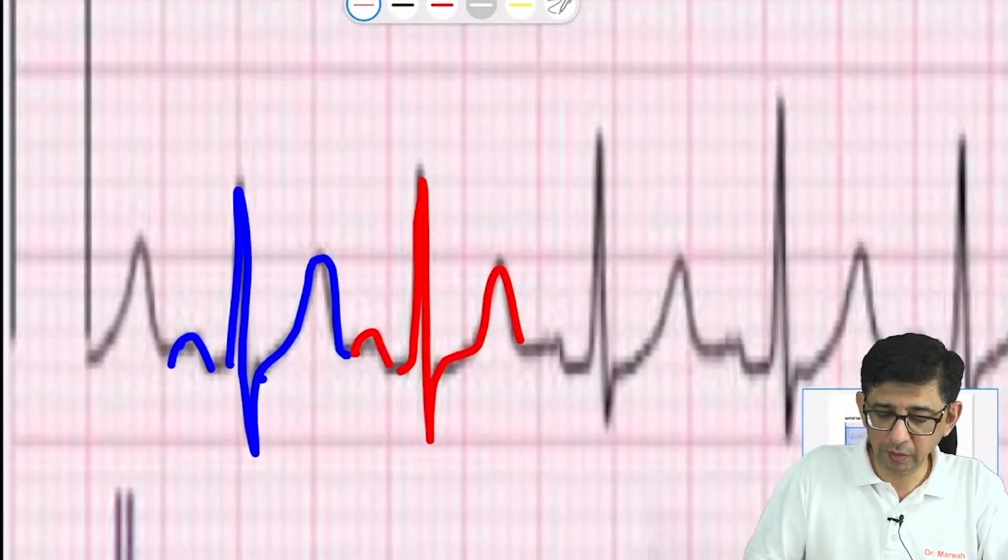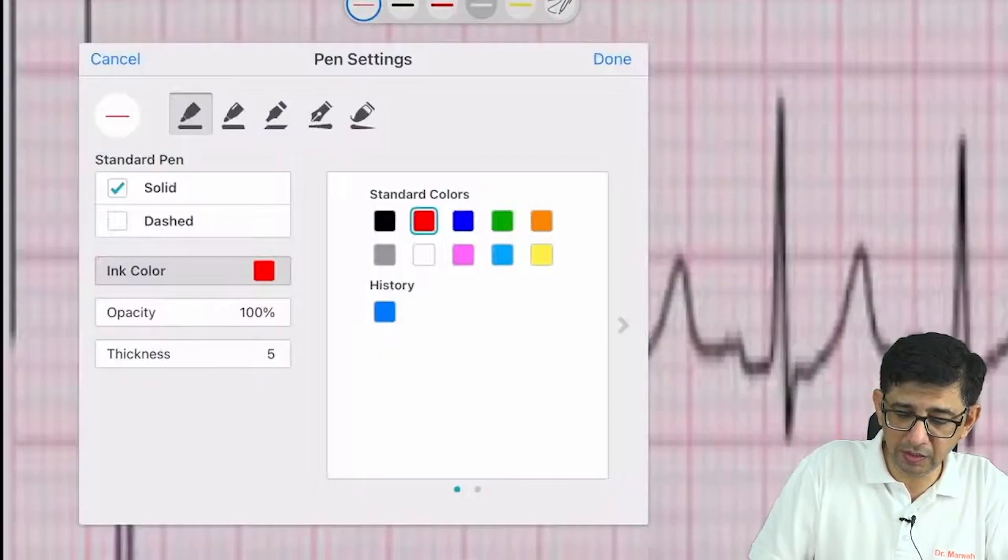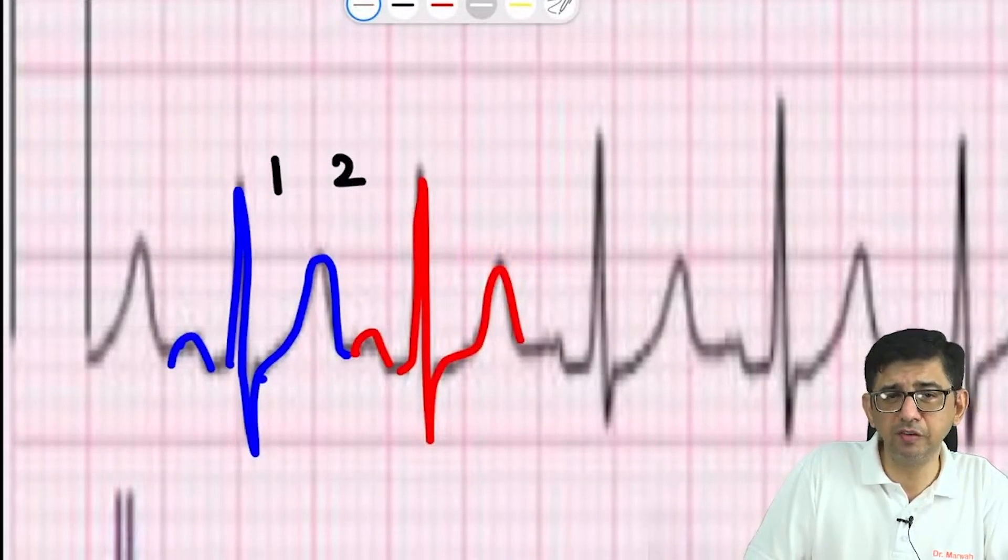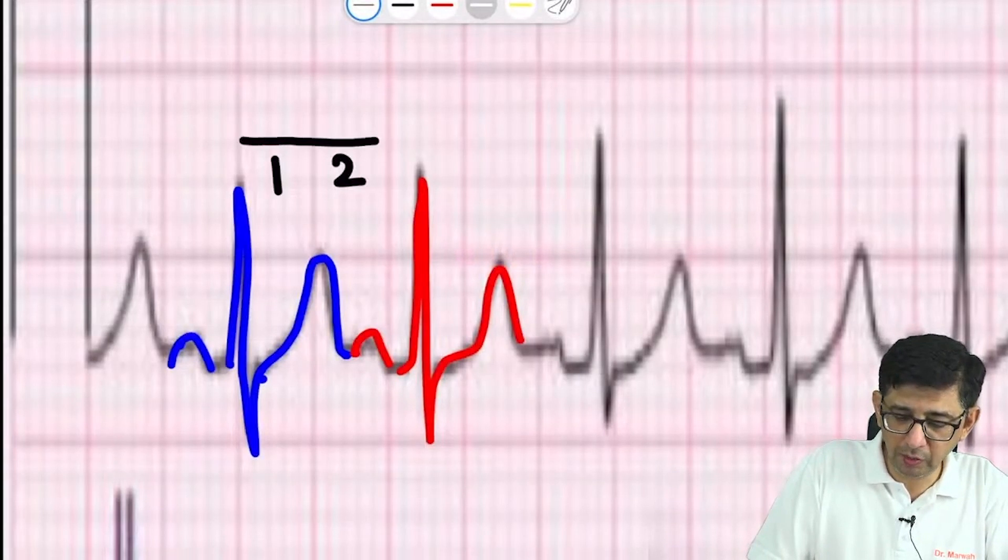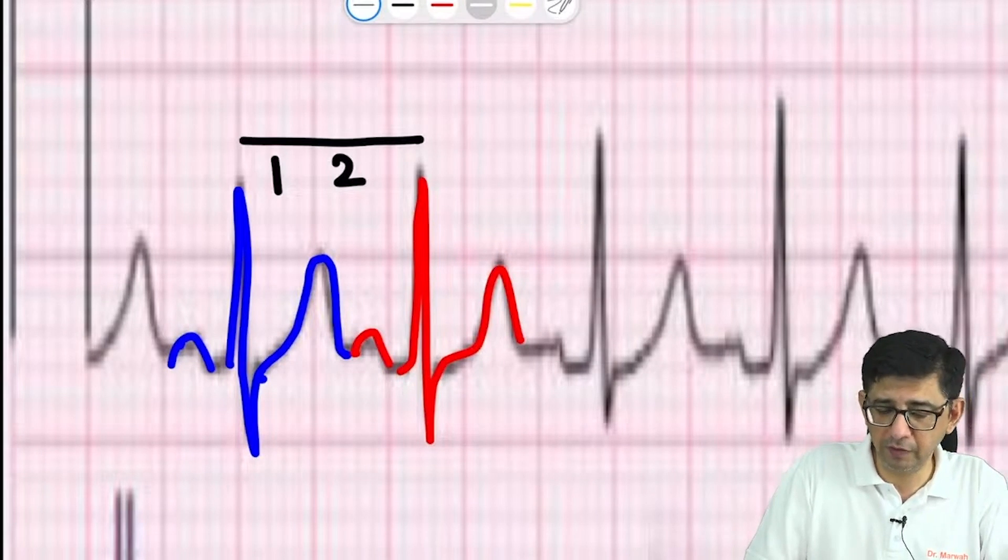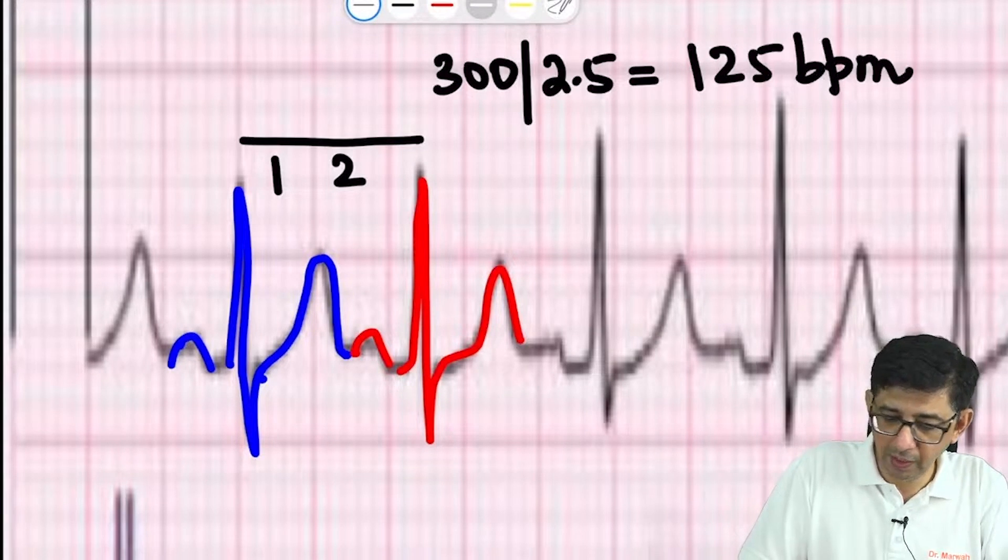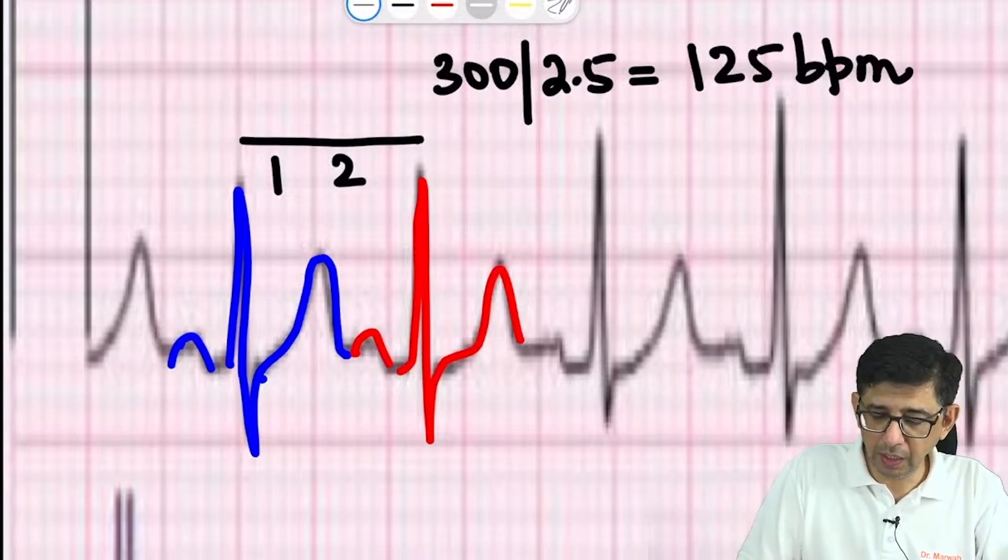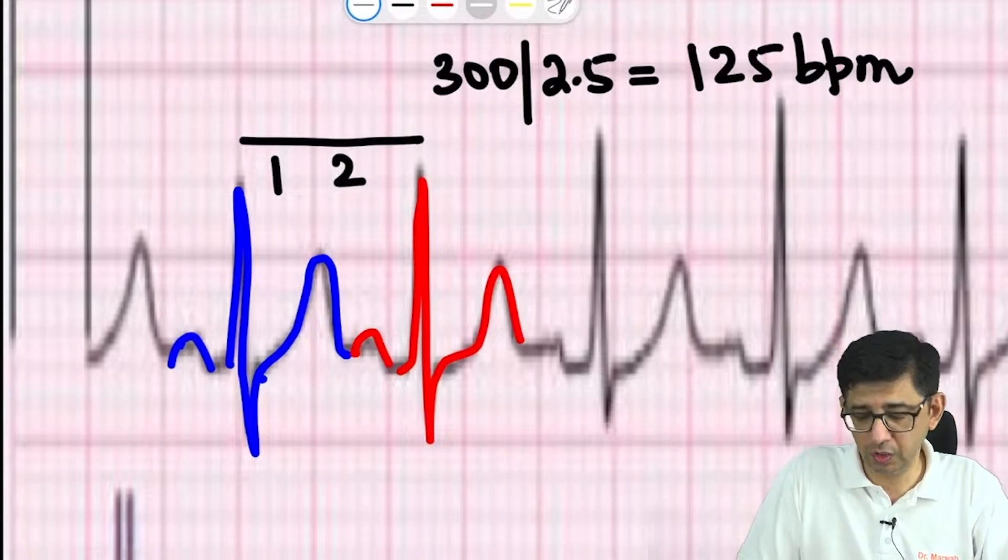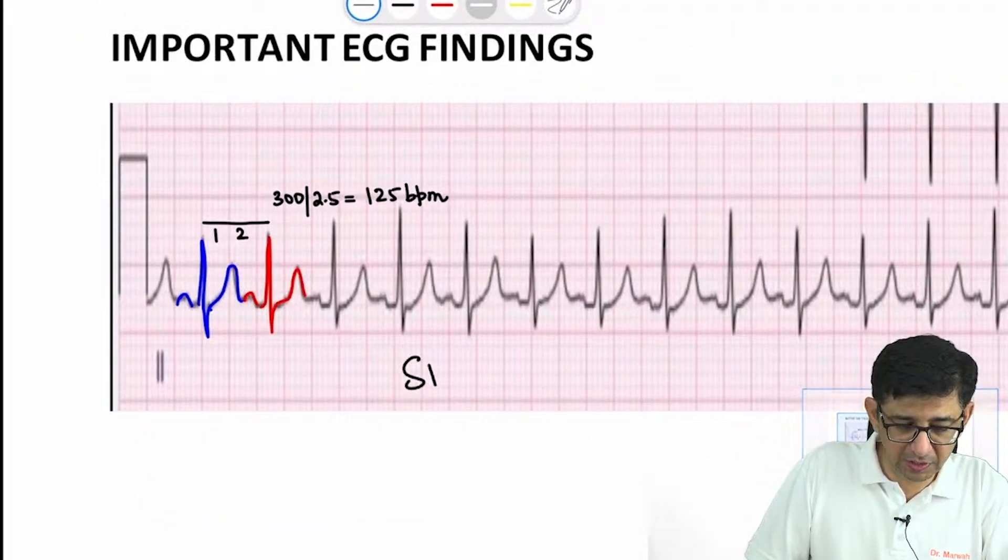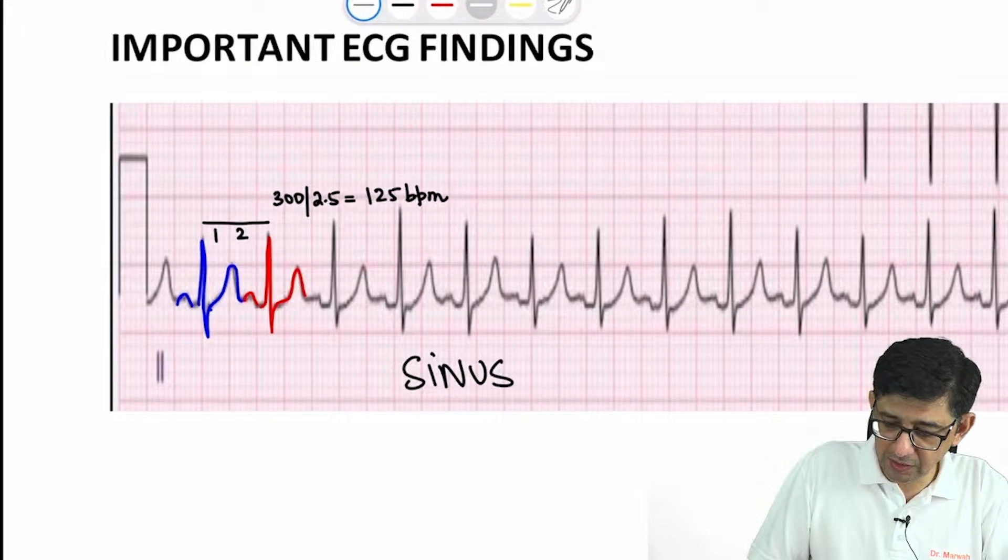If you zoom in, you can see there's tachycardia. The heart rate is about 125 beats per minute. Since T and P can be seen separately, this would be answered as sinus tachycardia. The first ECG we're discussing is sinus tachycardia.